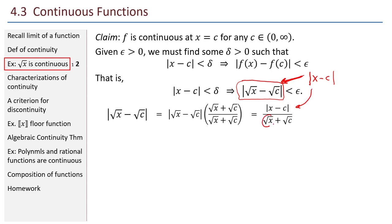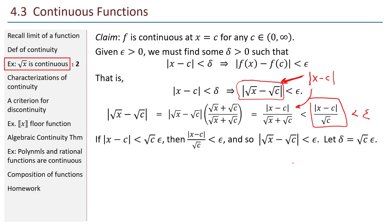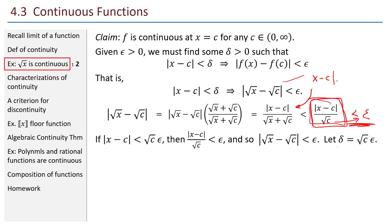There is a problem in that this expression has a variable in the denominator. To get rid of that, I can drop the square root of X from the denominator, making the expression a little bit bigger. That's acceptable because if the new bigger expression is still less than epsilon, then the original absolute value of square root of X minus square root of C is also less than epsilon. If absolute value of X minus C is less than square root of C times epsilon, then the right hand side will be less than epsilon. So let delta equal square root of C times epsilon.